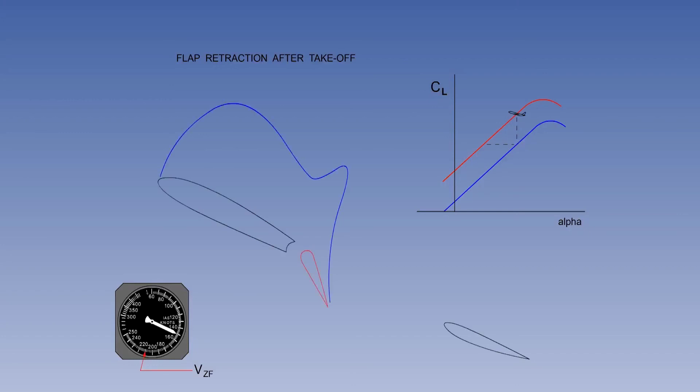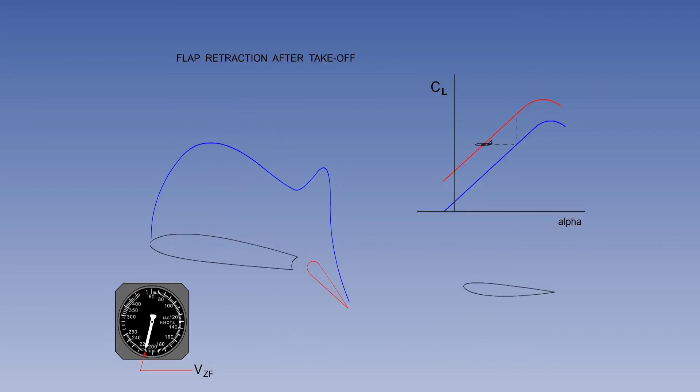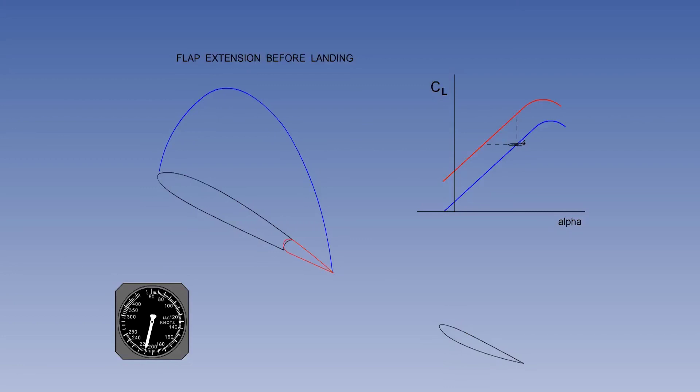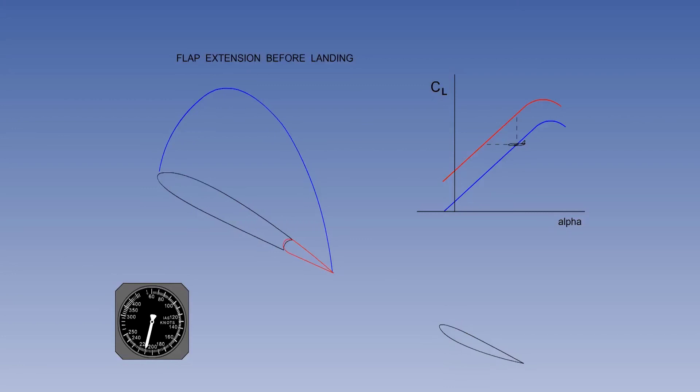Let's reset the original conditions to consider the correct way to retract the flaps after take-off. Before retracting the flaps, the indicated airspeed must be increased to VZF — the minimum indicated airspeed for zero flap. As the indicated airspeed increases, the angle of attack must be decreased to keep lift constant. Now when the flaps are retracted, the pilot can increase the angle of attack to keep the lift constant. When considering flap extension prior to landing, we can use the same principle of trading indicated airspeed and angle of attack to keep lift the same as the weight.